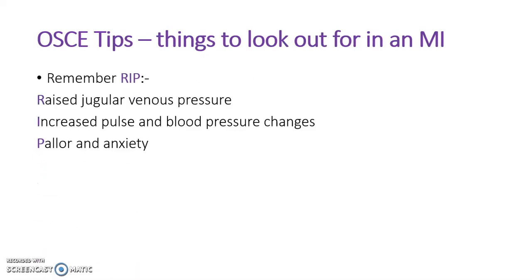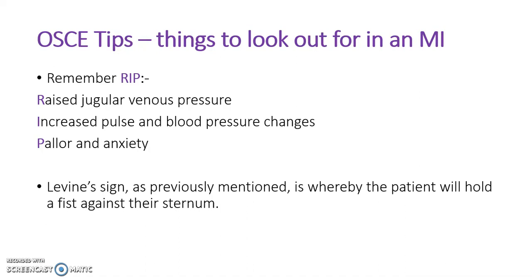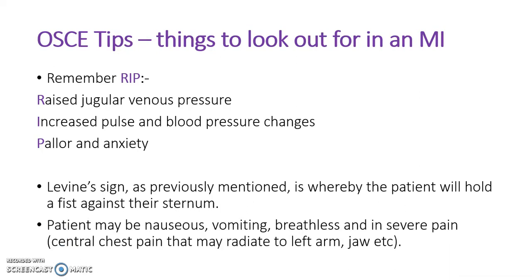On examination, remember RIP: raised jugular venous pressure, increased pulse and blood pressure changes, and pallor. The Levine sign, which we discussed before — the patient placing a fist on their sternum — may be present. The patient may also be nauseous, vomiting, breathless, and anxious. Remember the signs at each point in time.